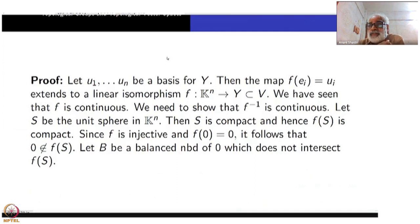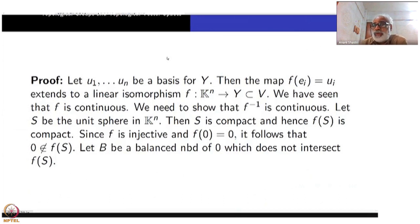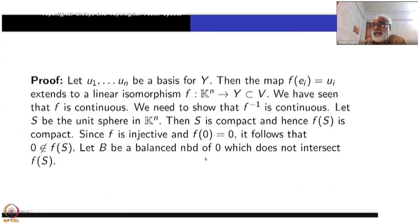Under a continuous map, compact subsets go to compact subsets. So f(S) is compact. Now f is injective, so f(0) = 0, meaning non-zero vectors won't map to 0. Therefore 0 is not in f(S). Now let B be a balanced neighborhood of 0 which does not intersect f(S).